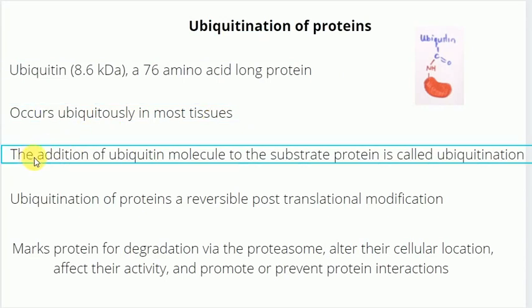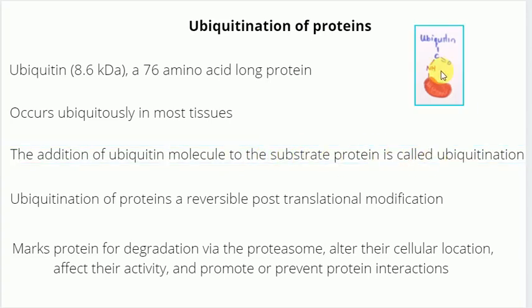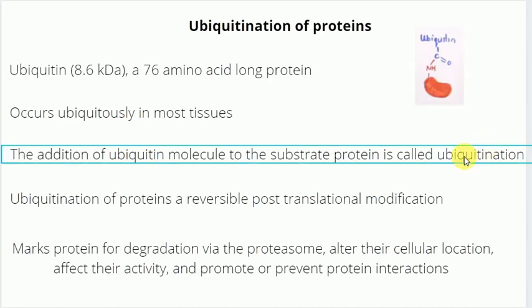The process of ubiquitination is defined as the addition of a ubiquitin molecule to the substrate protein. If you look at this picture here, this blue part is the ubiquitin molecule and this red part indicates the substrate molecule. The addition of this ubiquitin molecule to the substrate protein by the formation of an isopeptide bond is called ubiquitination. In some literature, ubiquitination has alternatively been called ubiquitylation.